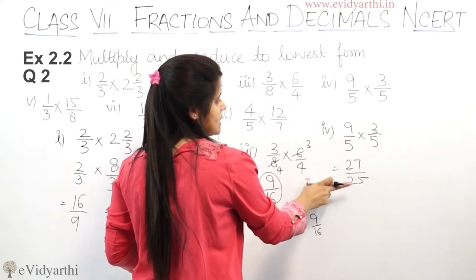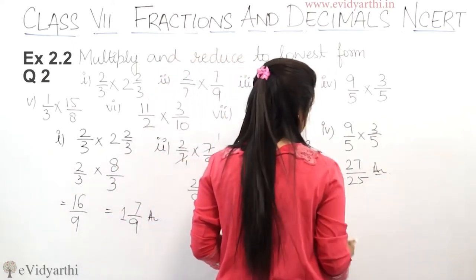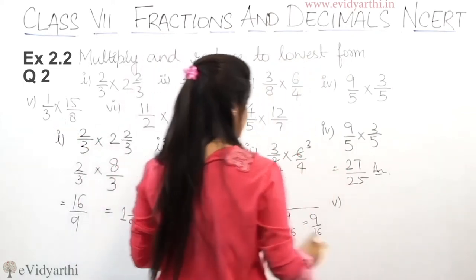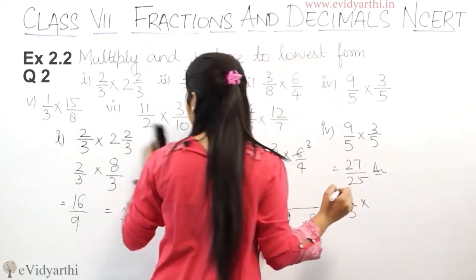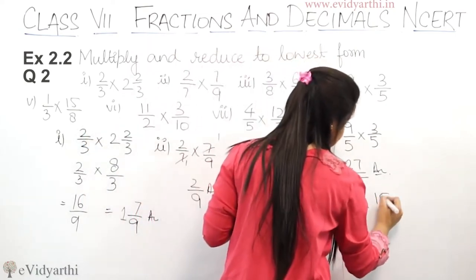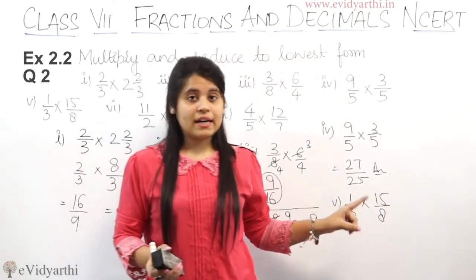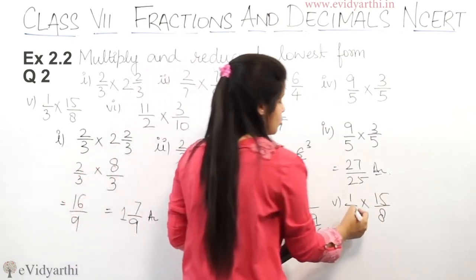So the fifth part is 3 upon 8 into 15 upon 8. Now if you can see that 3 and 15 are cut because 3 is 3 table and 15 is 3 table.